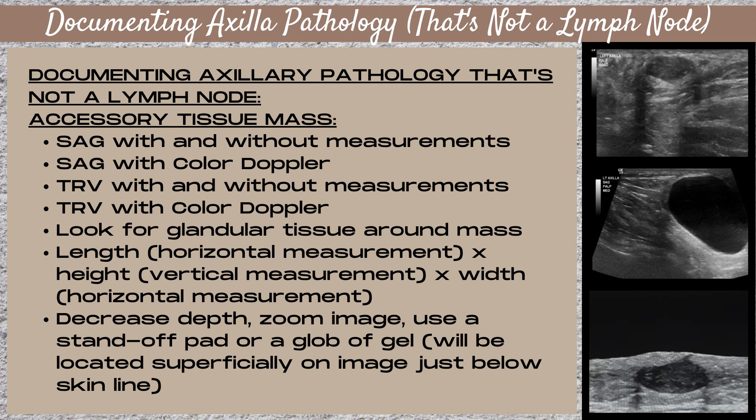It's not important which transducer planes you take your measurements from — you just need to make sure you have a length (horizontal measurement), a height (vertical measurement), and a width (horizontal measurement). For a mass in the accessory breast tissue, you want to decrease your depth since that tissue will be located just under the skin line, very superficially on the image. You can also zoom the image, and it's very helpful to use a standoff pad or a glob of ultrasound gel in order to see the superficial mass more clearly.